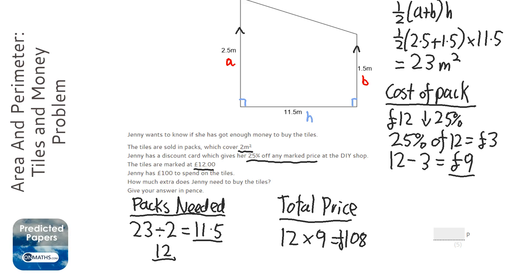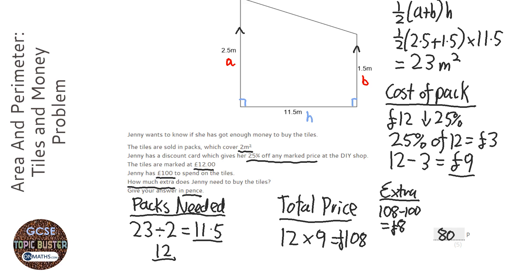Now, the last bit of the question, she says she's got £100 to spend. How much extra? So it wants it in pence as well. My goodness. So we need to do extra. And all I'm doing here is doing 108 take away 100, which equals £8, which is 800 pence.